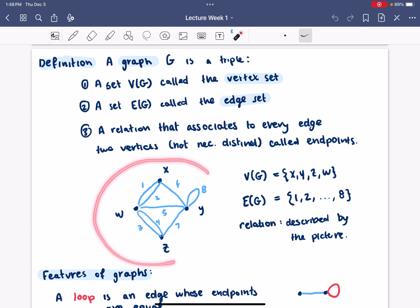In this picture, x, y, z, and w are the vertices, and these blue things are the edges. Here's our vertex set: x, y, z, w, and the edges: one, two, up to eight. And the third part, the relation, is described by the picture. Then we just set up some language for talking about graphs.